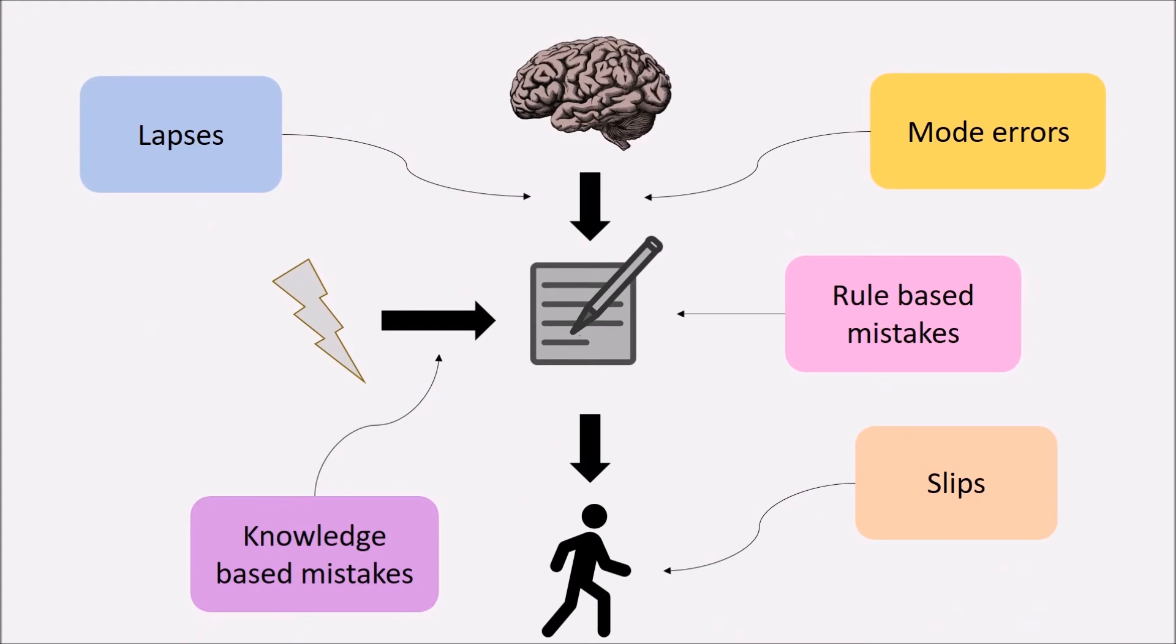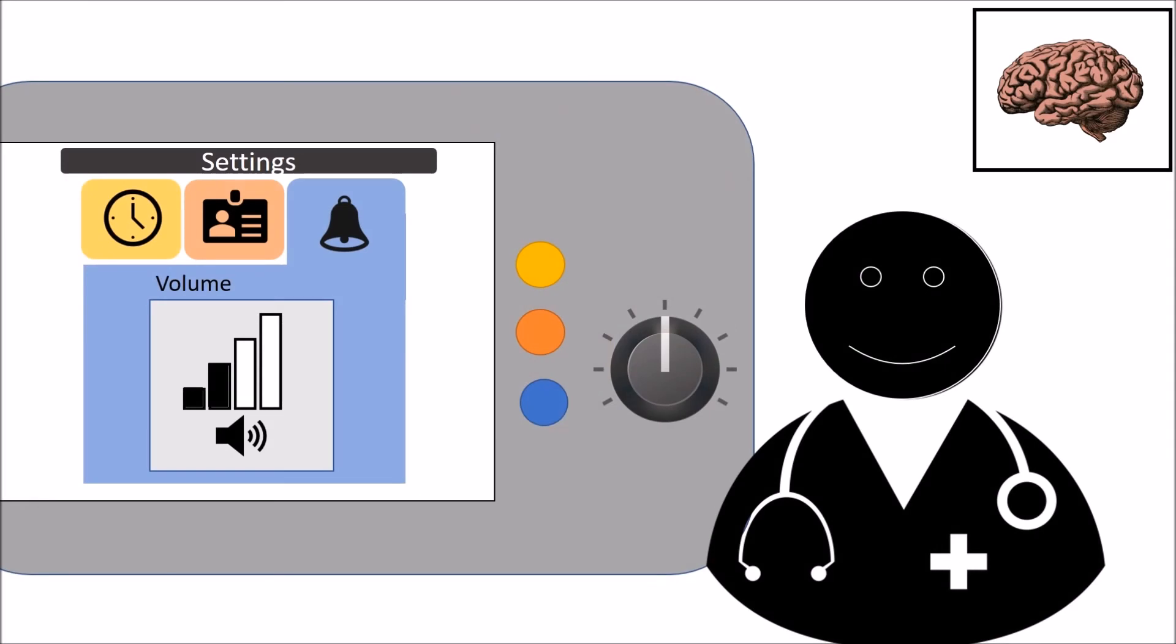With the gained knowledge, we can now return to the opening question. How is it possible to design machines in order to prevent human error? Some suggestions are: avoid multi-mode systems and if not possible, make the mode clearly visible.